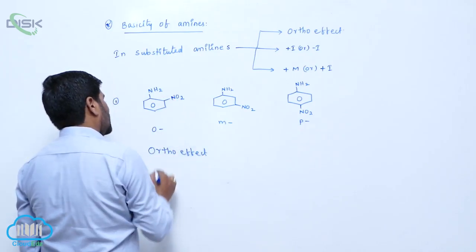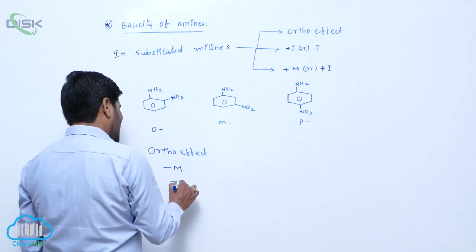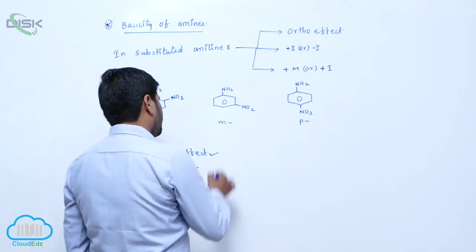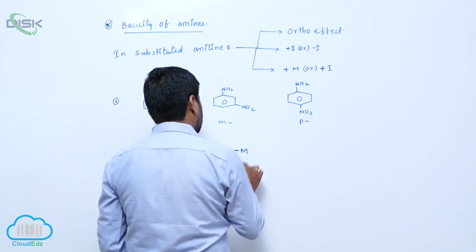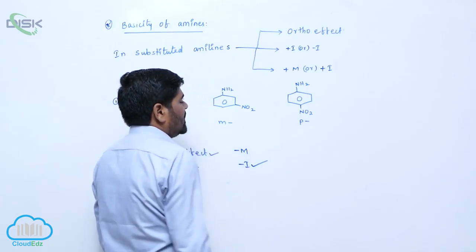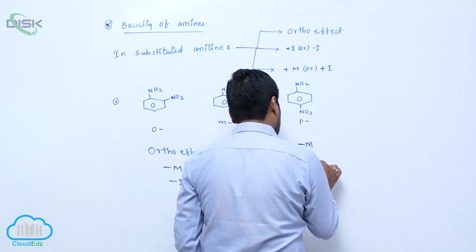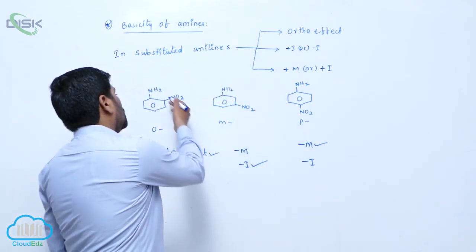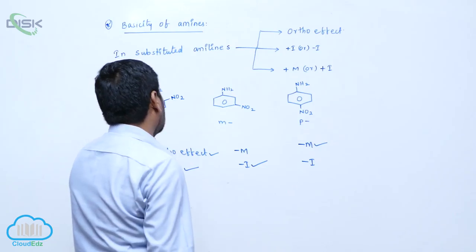The nitro group at this position can act as a minus-M effect and minus-I effect. Between these two, the Ortho-Effect and minus-M effect is more dominant here. For meta, there is no Ortho-Effect — only consider minus-M effect and minus-I effect, between which minus-I effect predominates. For ortho, minus-M effect is predominate due to Ortho-Effect.